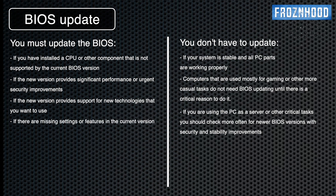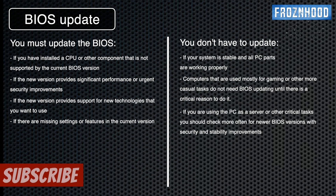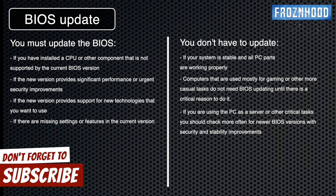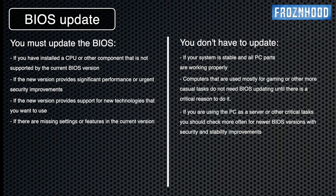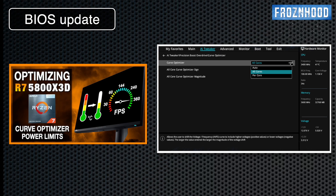If the newer BIOS versions bring real performance or security improvements, you should try to find more information and consider updating. If the newer BIOS versions bring support for newer technologies that you want to use, you have to update. Resizable BAR is a good example. If the newer BIOS version adds additional settings that you need, then again you have to update. For example, many people who watched my video about optimizing the 5800X3D CPU didn't have the curve optimizer setting in their current BIOS.